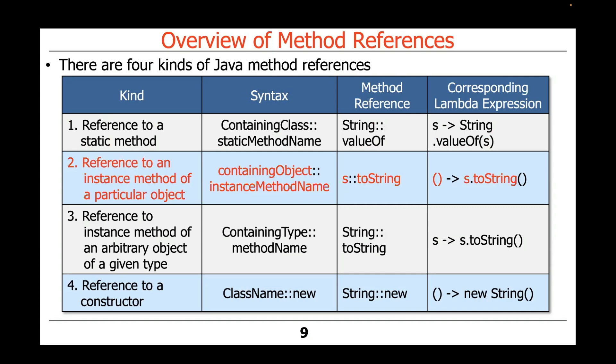Another kind of method reference in Java is a reference to an instance method of a particular object. In this case, we have a containing object colon colon instance method name as opposed to static method name. Another example here would be s colon colon toString, which is essentially converting some value s to a string. As you can see here, the corresponding Lambda expression is the empty parameter list open close paren arrow s dot toString.